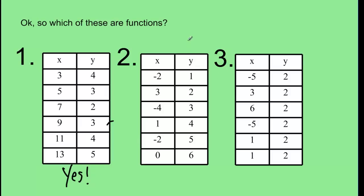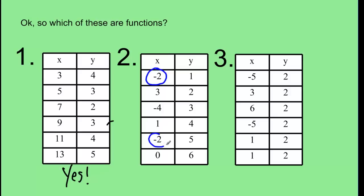What about the second table? We're looking to see if for any given x value there is only one possible y value. Looking down the list, I notice that there are two values of x that are repeated: x equals negative 2 appears here and again here. A number is allowed to be repeated in the table, but we need to check if the y values are the same for both. When x is negative 2 here, y is 1. But when x is negative 2 here, y is 5. That can't happen in a function — for any given x there can only be one possible y — so this is not a function.